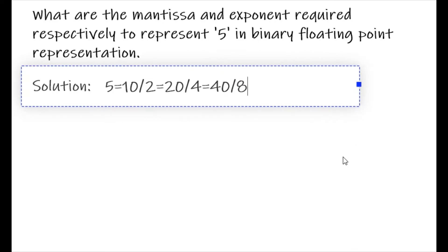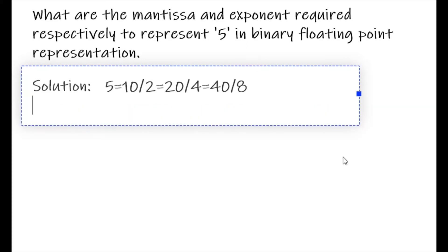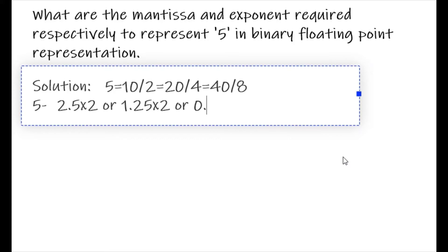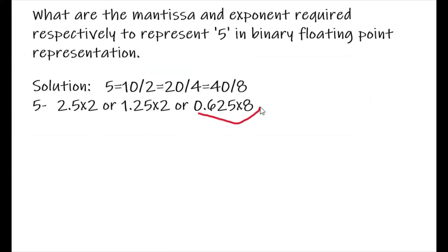To represent 5 in point form, 5 can be represented as 2.5 multiplied with 2, or 1.25 multiplied with 2, or 0.625 multiplied with 8. These are the binary floating point representations. The others — 10/2, 20/4, 40/8 — are not floating point binary representations.